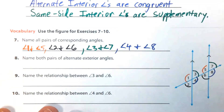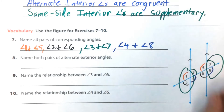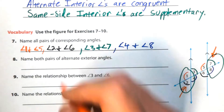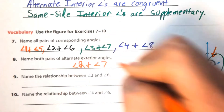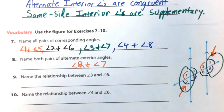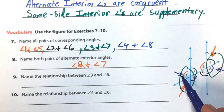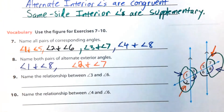Number 8: Name both pairs of alternate exterior angles. Exterior means outside of the parallel lines. For alternate exterior, the angles must be on either side of the transversal. Angles 2 and 7 are on alternate sides of the transversal and exterior — that's the first pair. Angles 1 and 8 are also outside the parallel lines but on alternate sides of the transversal — alternate exterior.